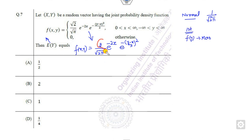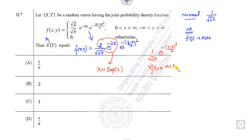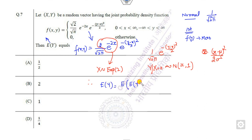Now how you can solve that more efficiently? You can see one part is the exponential distribution with parameter 2. The remaining part is 1 by root of 2 pi times e raised to power minus y minus x whole squared by 2. That is a conditional normal distribution — y given x — which follows the normal distribution with mean x and sigma equal to 1. So by using the tower property, the expected value of y is the expected value of the conditional mean, which is the expected value of x. The mean of the exponential distribution is 1 by 2, so that is the right answer.